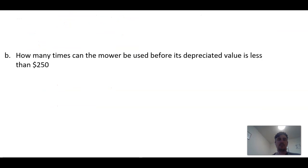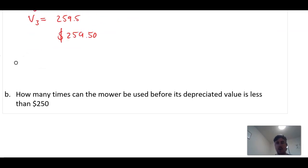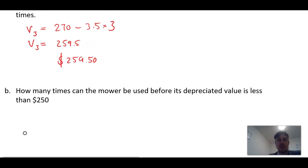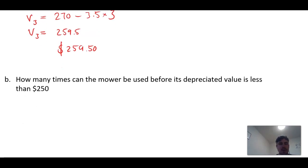In this last bit, how many times can the mower be used before its depreciated value is less than $250? So have a go at this one before I show you. If we get 270 and we take away 3.5n number of times, and it equals 250, what is n for that? You can solve this algebraically, or because we're in further maths, we're okay to use solve for n.